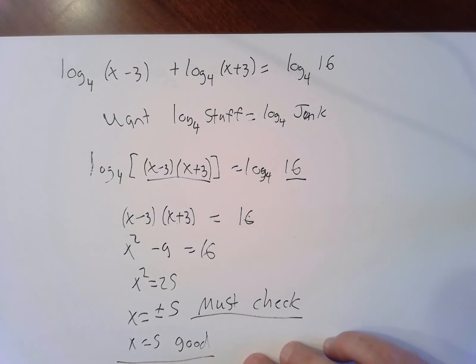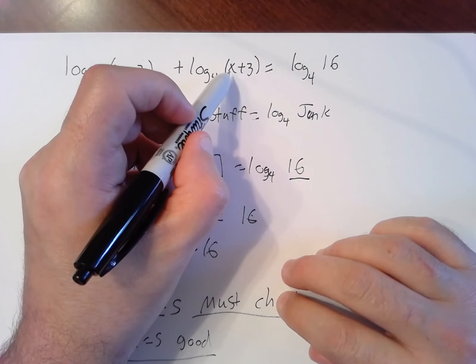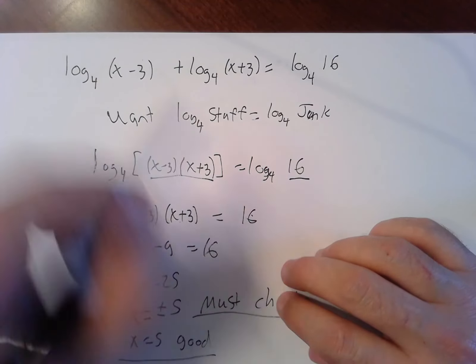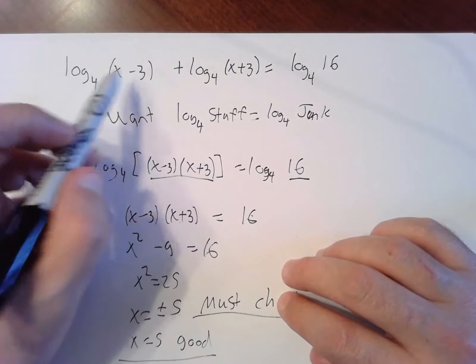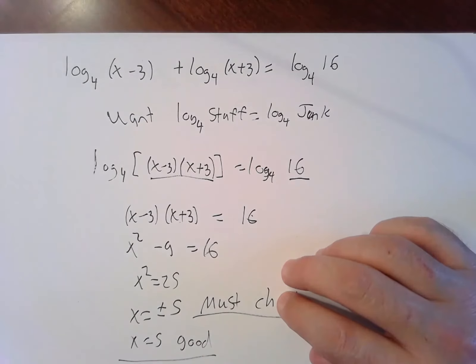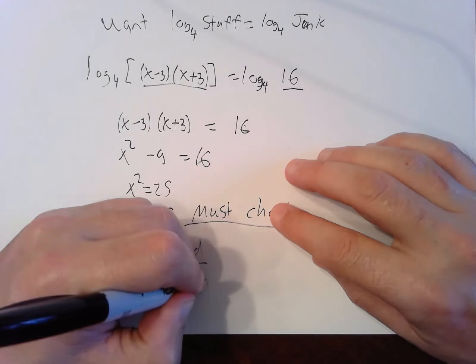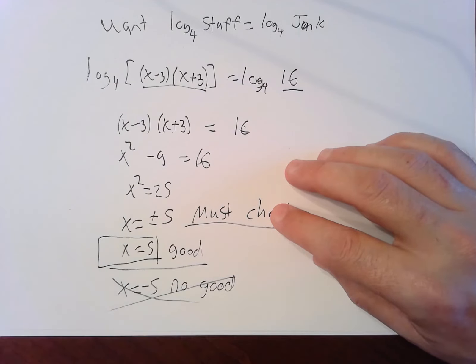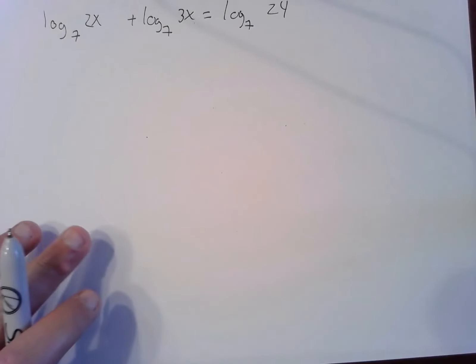What about negative five? Don't care that x is negative. What I care is when I plug in here, negative five plus three is negative two. I can't take log of a negative. Same here, doesn't matter. Once it's bad it's bad. Negative five minus three would be negative eight. You can't take log of base four of negative eight. X equals negative five is no good. So that guy's just gone, our only solution is x equals five.